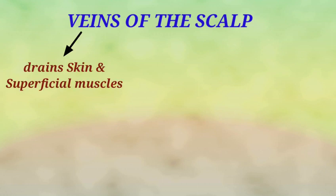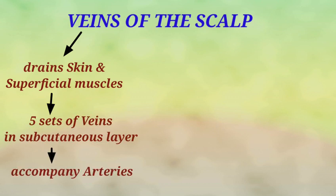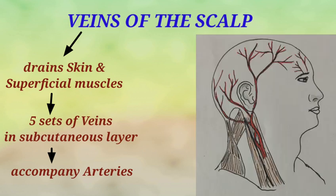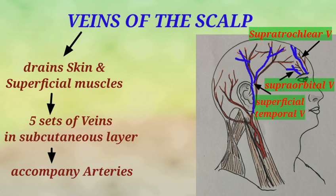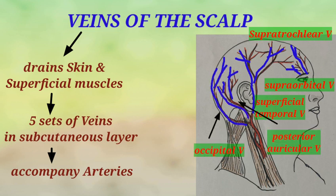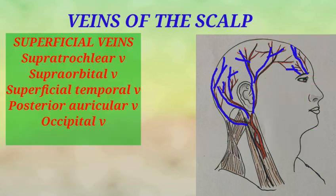The skin and the superficial muscles of the scalp are drained by five sets of veins which accompany the arteries. These veins are present in the dense subcutaneous tissue beneath the skin. The supratrochlear vein, the supraorbital vein, and the superficial temporal vein drain the venous blood from the frontal part, the eyebrows, the upper eyelid, the parietal region, and from the temporal region. The posterior auricular vein and the occipital vein drain the venous blood from the posterior part of the ear and the occipital region.